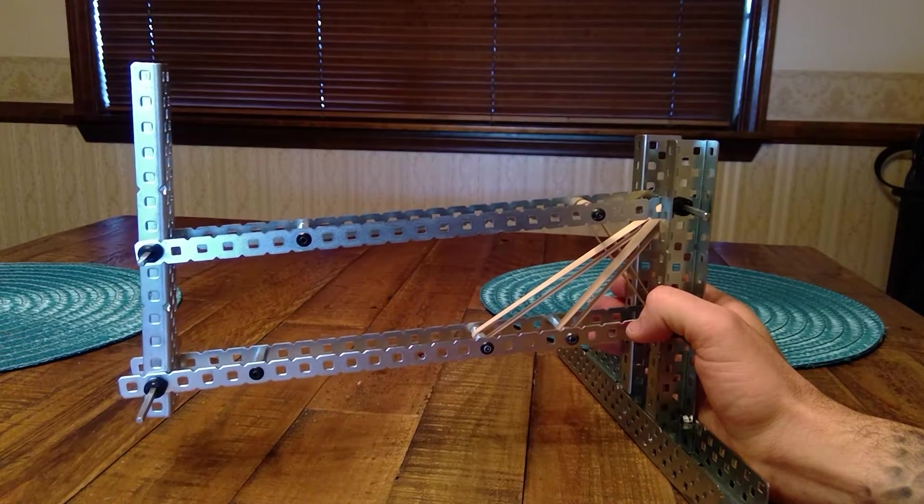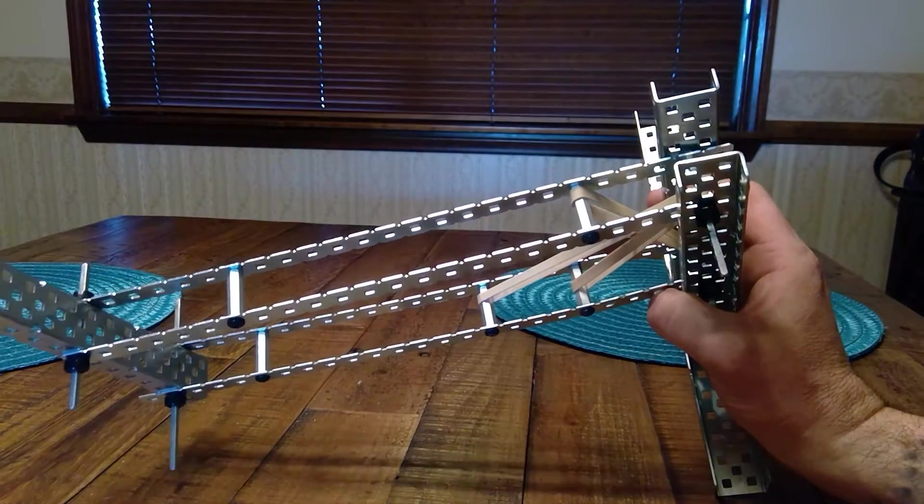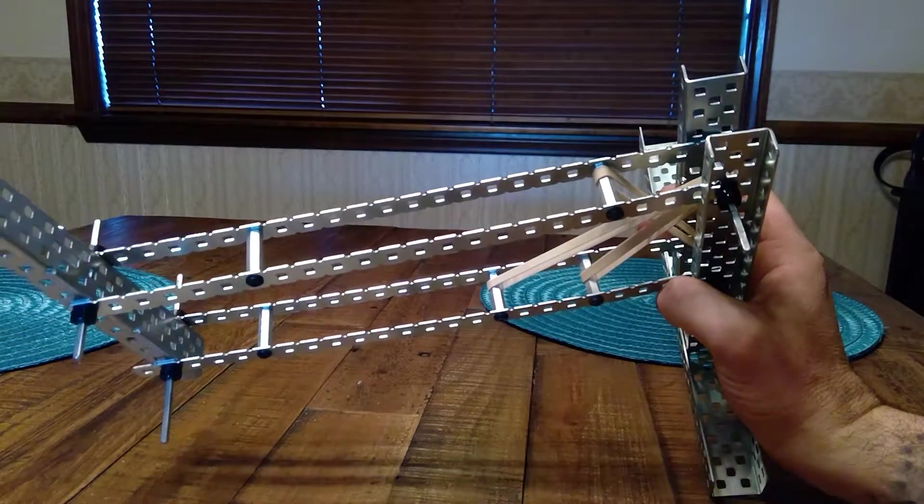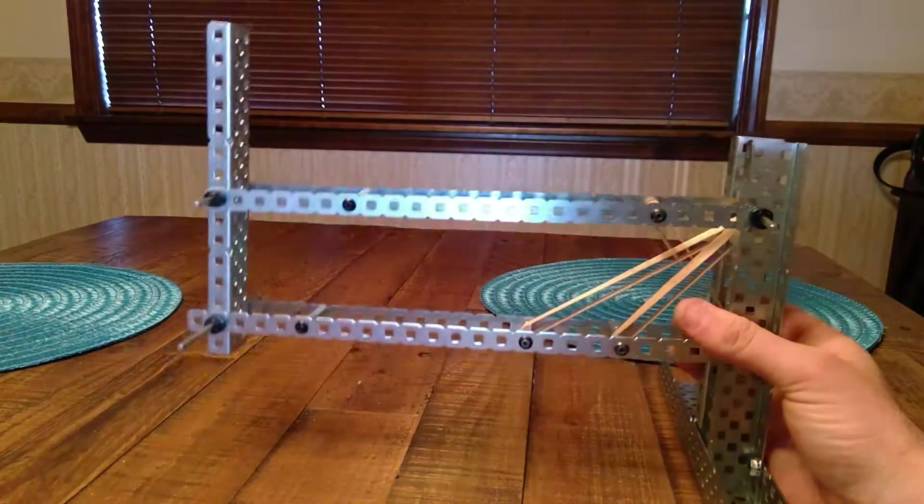All right, this is a four bar linkage. It's called a four bar linkage because there's four bars that hold the whole thing together. We're going to be using it in VEX to create suspension for an off-road dune buggy.